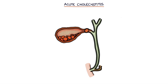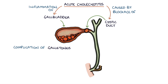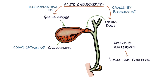Acute cholecystitis refers to inflammation of the gallbladder, which is caused by a blockage of the cystic duct preventing the gallbladder from draining. Acute cholecystitis is a key complication of gallstones and the majority of cases — around 95% — are caused by gallstones. Acute cholecystitis caused by gallstones is called calculus cholecystitis.